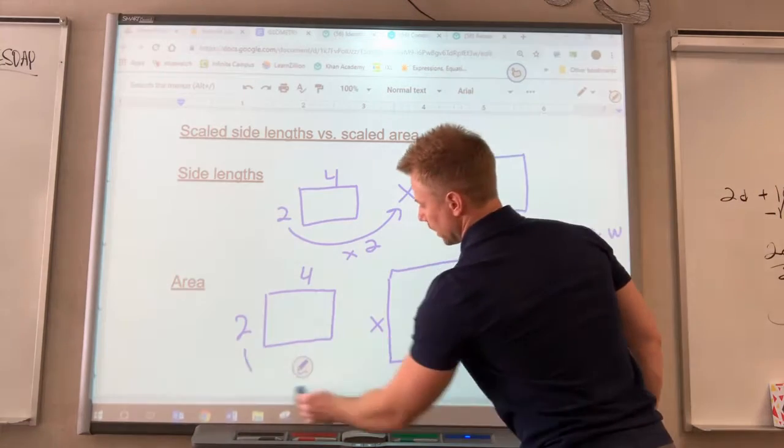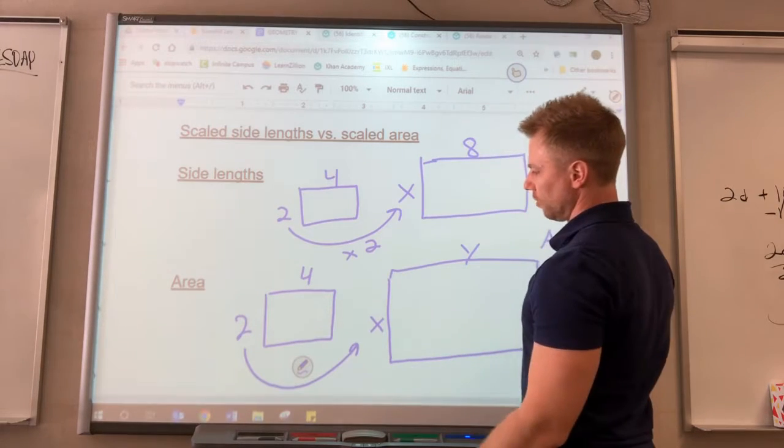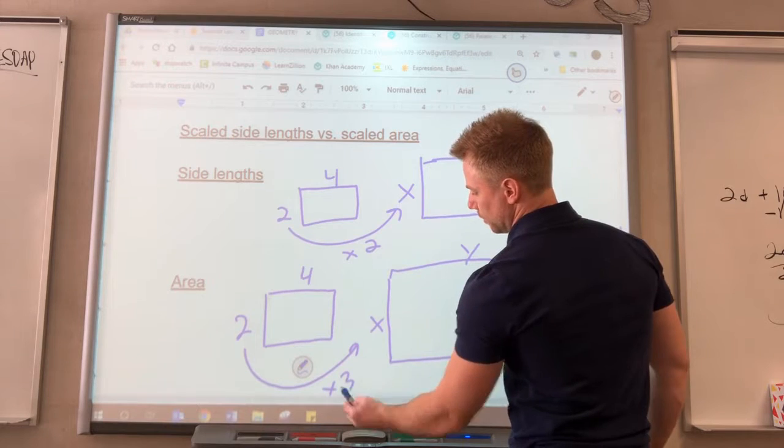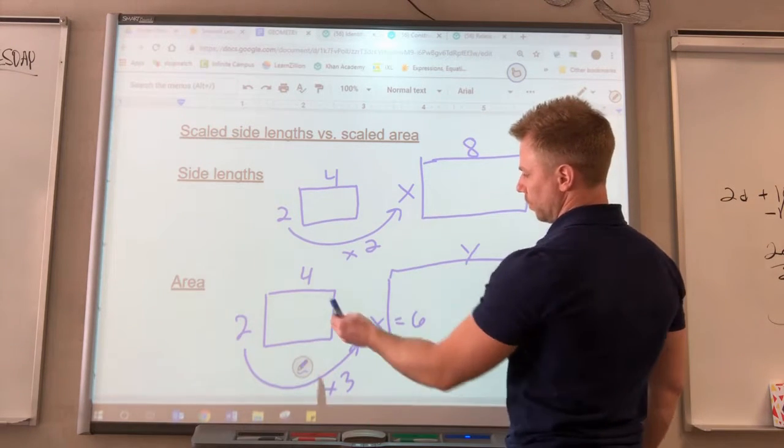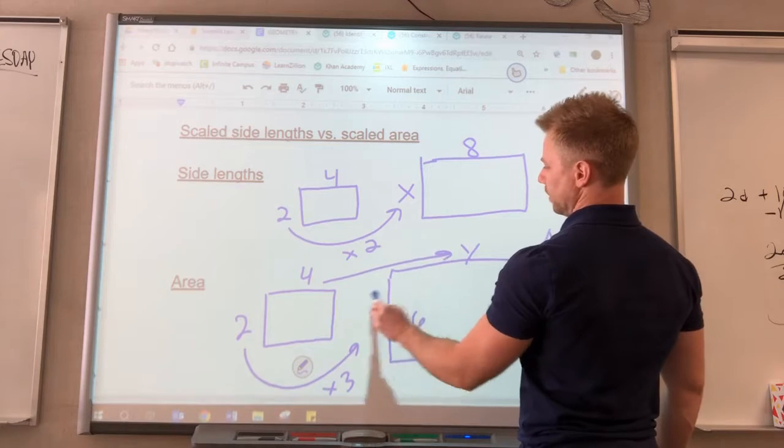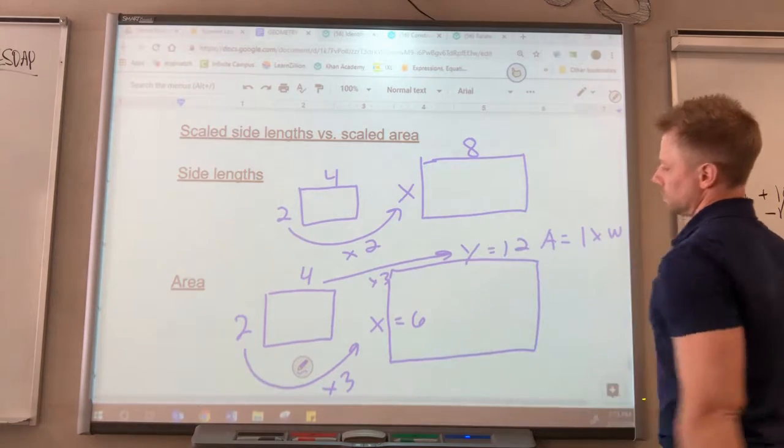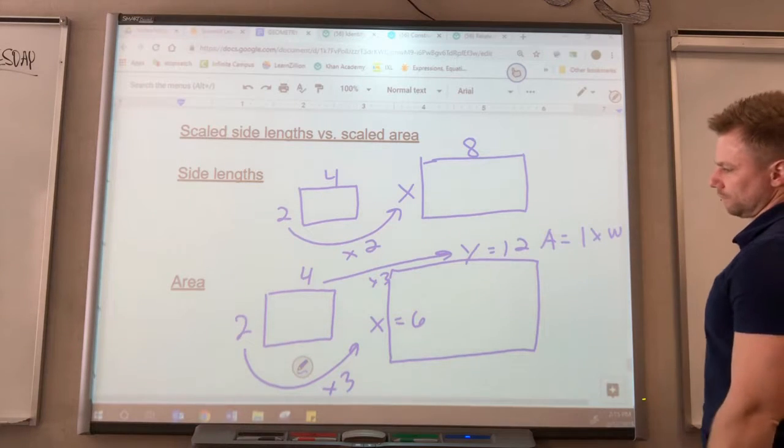So we have to multiply, let's say the scale factor is 3, we have to multiply by 3 to get 6 for the width, we have to multiply by 3 to get 12 for the length.